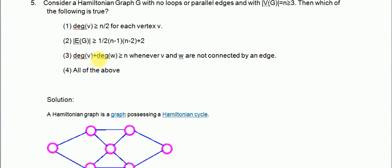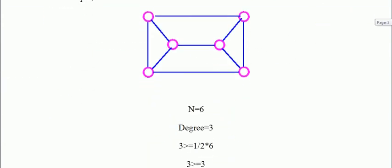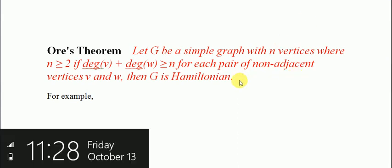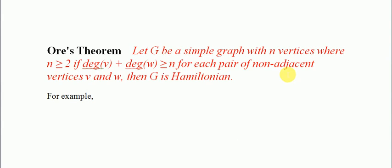Option number 3 states: degree of vertex V plus degree of vertex W is greater than or equals to N whenever V and W are not connected by an edge. This is a theorem known as Ore's theorem, which states: let G be a simple graph with N vertices where N ≥ 2. If deg(V) + deg(W) ≥ N for each pair of non-adjacent vertices V and W, then G is Hamiltonian.